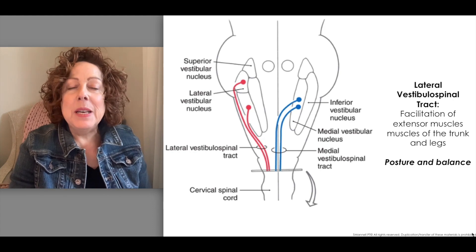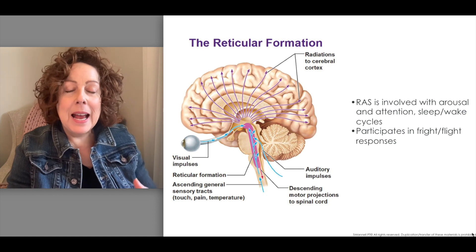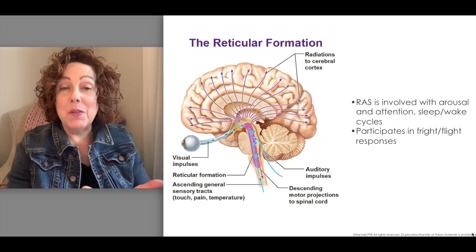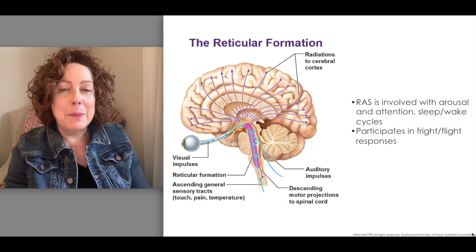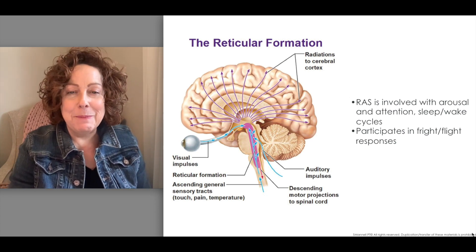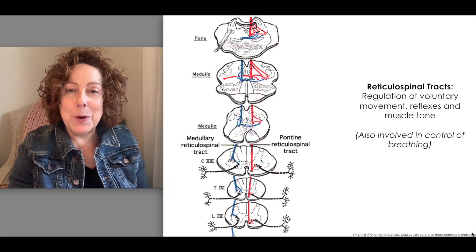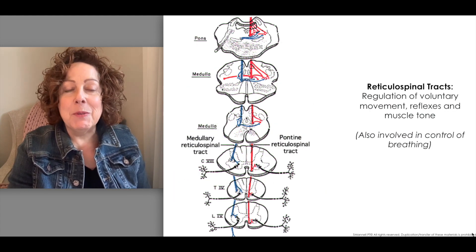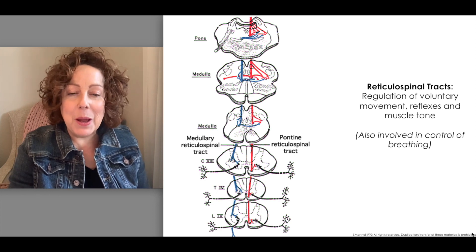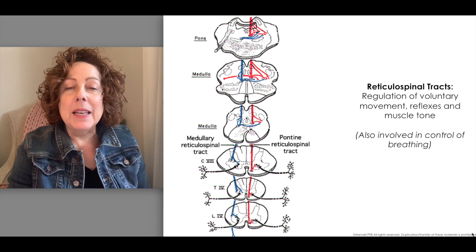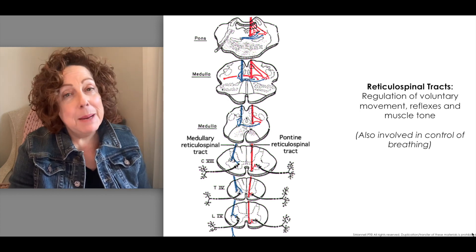Lastly, we need to remember about the reticular activating system and how it is responsible for the arousal in the central nervous system — that underlying piece that allows us to pay attention — and the fact that there is a reticulospinal tract that runs from the reticular activating system to the muscles of the body, allowing for regulation of voluntary movement, reflexes, and muscle tone.